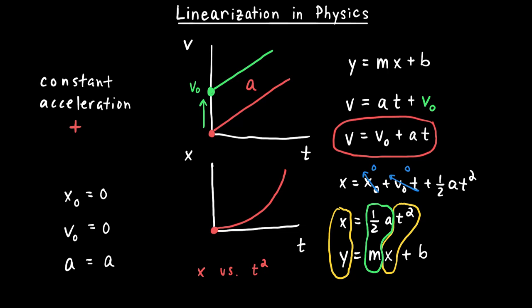I should also point out that plus zero is hiding in the kinematic equation — the y-intercept of this graph would be zero because the object started with an initial position of zero. This is the process of taking a non-linear graph and making it linear by matching it to the equation of a line. It's easier to analyze a graph with a constant slope, and in this case if you want to find the acceleration it's much easier to create a graph of x versus t squared rather than x versus t so you can find the slope of a straight line.